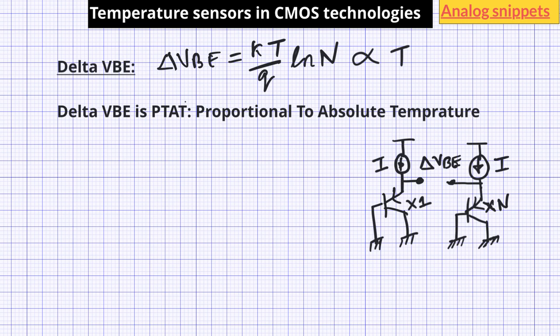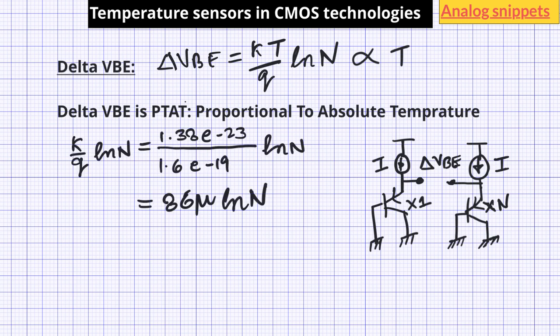Delta VBE is zero at absolute zero temperature and increases with a slope of (K/Q) × ln(N). One problem is that this slope is very small. Putting in the values of K and Q, it turns out to be 86 microvolts multiplied by ln(N). For a typical value of N = 16, this gives about 239 microvolts per Kelvin — roughly 10 times smaller than the slope of diode voltage. With this slope, the voltage difference between minus 40°C and 125°C is only about 30 millivolts, so amplification is needed. Another minor problem is that this voltage is not ground-referred as with diode voltage, but this can easily be solved by differential sensing.